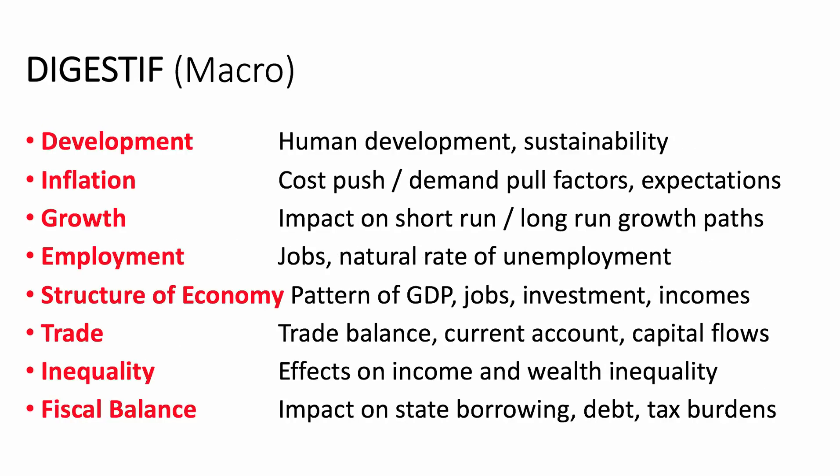DIGESTIVE is macro. D — Development outcomes: human development, sustainable development, inclusive development. I — Inflation, including cost-push and demand-pull. G — Growth: short-term and long-term perspectives — that distinction is particularly important. E — Employment, unemployment, and the natural rate of unemployment. S — Structure of an economy: where GDP comes from, the pattern of employment, the pattern of income growth, and living standards. T — Trade: balance of trade, current account, and financial flows. I — Inequality: consequences for income and wealth inequality. V — and E — Government: effects on government spending, tax revenue, borrowing, and national debt.